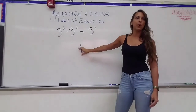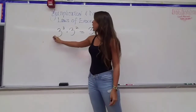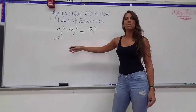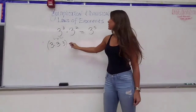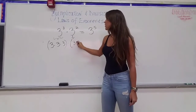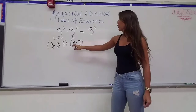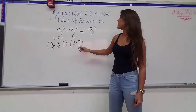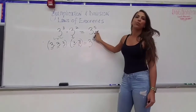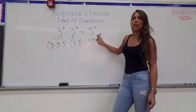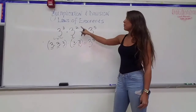Let's talk about why this happens, because if you forget the rule, you can always prove it to yourself — it's more important to know why than to know the rule itself. 3 to the 3rd means 3 times 3 times 3, and that gets multiplied by 3 squared, which means 3 times 3. If we count all the 3's — 1, 2, 3, 4, 5 — we see there are five 3's, so this can be written as 3 to the 5th power. If you forget the rule, write the expression in expanded form and it will remind you that you add the exponents.